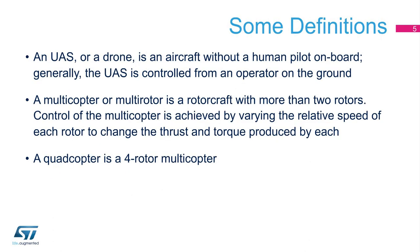An unmanned aircraft system, or UAS, sometimes called a drone, is an aircraft without a human pilot on board. Instead, the UAS is controlled by an operator on the ground.